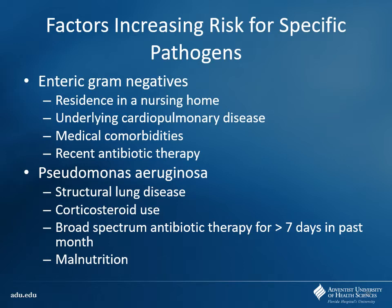The worst of the worst to think about from empiric coverage is pseudomonas. Do they have things like corticosteroid use? That causes immunosuppression — these are normal things you may be exposed to, but if you have a good immune system you can fight them off. These individuals are going to be sicker; they're going to have malnutrition. If they've been on broad-spectrum antibiotics recently, these things predispose them to getting pseudomonas. And what did I say about coverage for pseudomonas? You have to double cover initially.